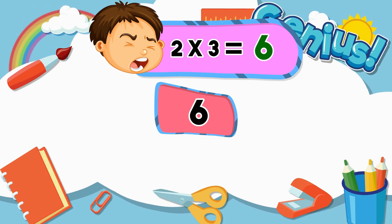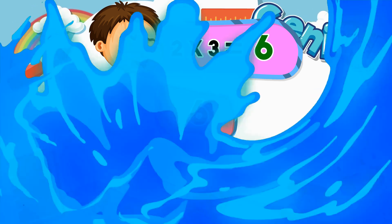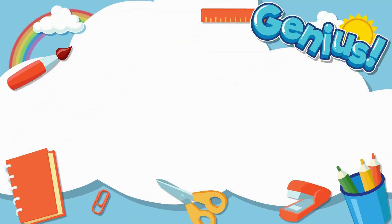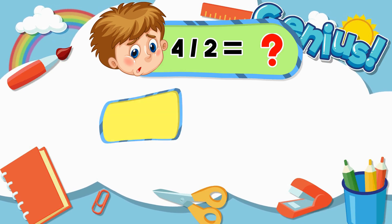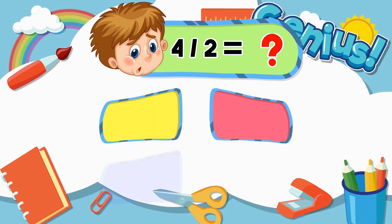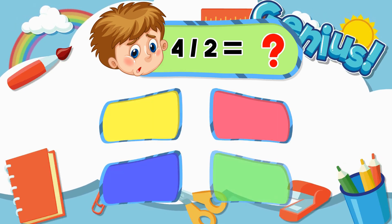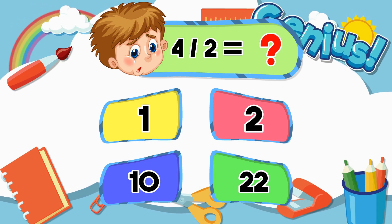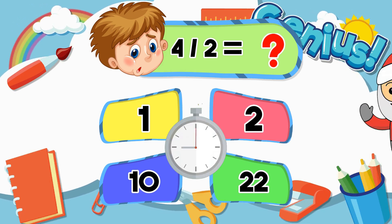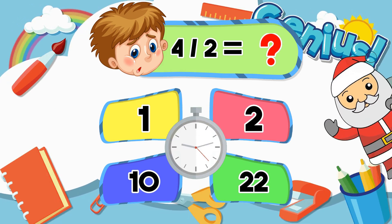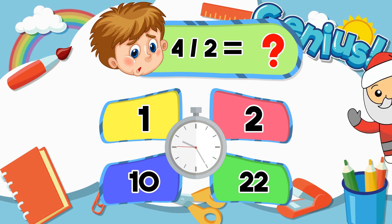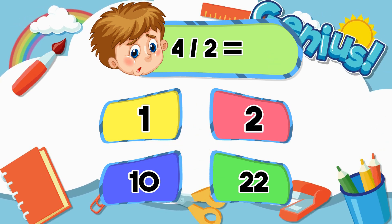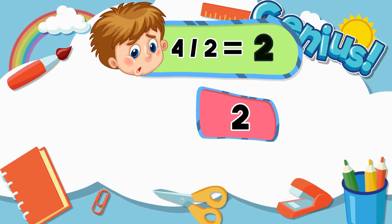What is 2 times 3? 2, 6, 7, 1. What is 4 divided by 2? 1, 2, 10, 22. 2.